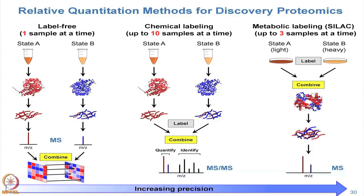After combining labeled samples and running them in a mass spectrometer, you do MS/MS and the quantitation comes at the level of the MS/MS spectrum. With SILAC, you combine earlier in the process. Multiplexing-wise, SILAC can do up to three samples (light, medium, heavy). With TMT-10 reagent you can combine ten samples; iTRAQ comes in iTRAQ-4 and iTRAQ-8 versions, and there is also TMT-6.